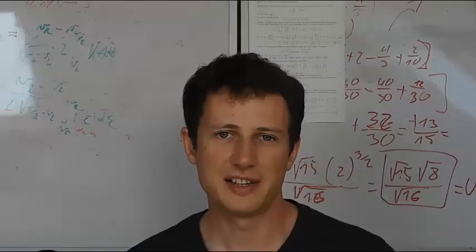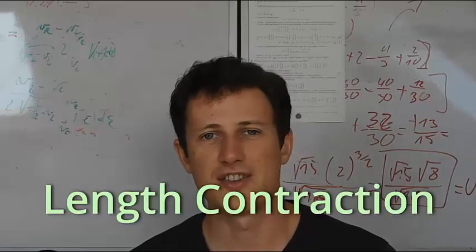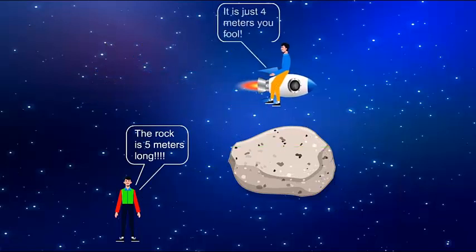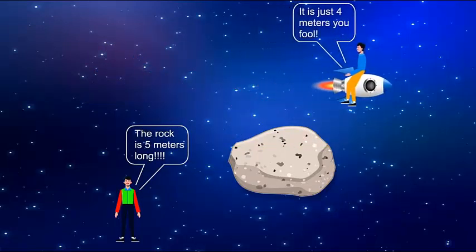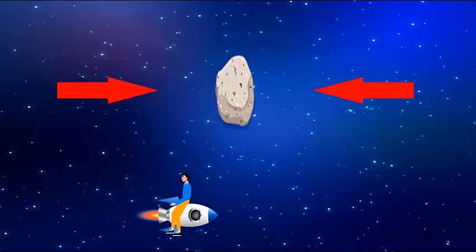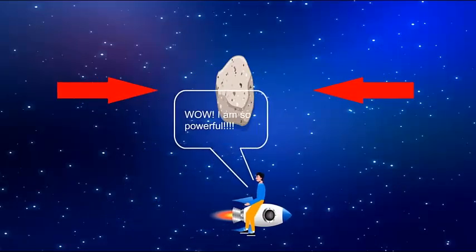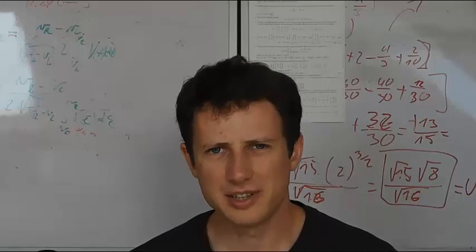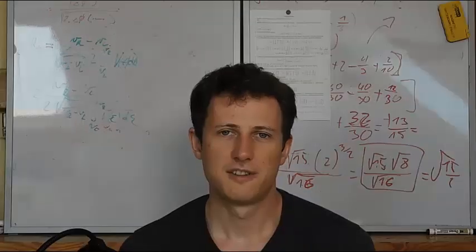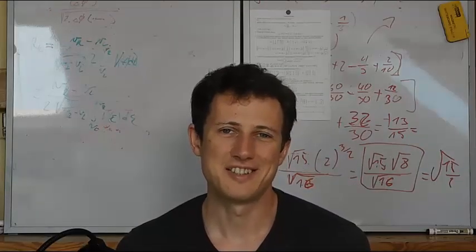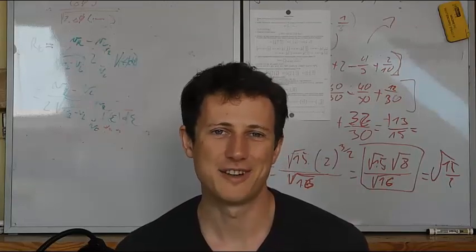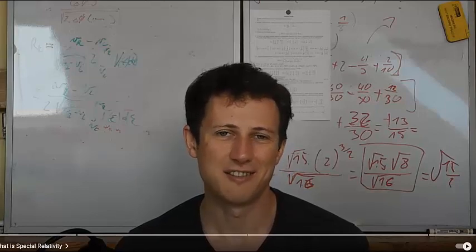In special relativity there is a phenomenon called length contraction. It says that the measured length of an object depends on the relative velocity of the object and the observer. But this is a really awkward and difficult thing to accept because how can a solid object shrink just because we are moving relative to it? Is it really true that a solid object can shrink due to relativity, or is it just an illusion? The first option is suspicious because there is simply no way a distant observer could change the size of an object just by changing its relative motion.